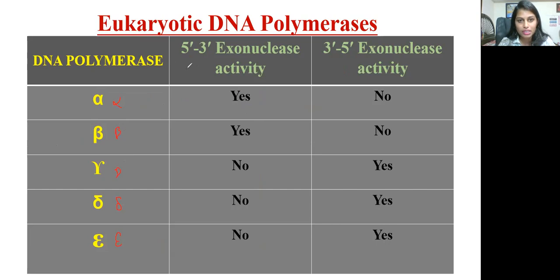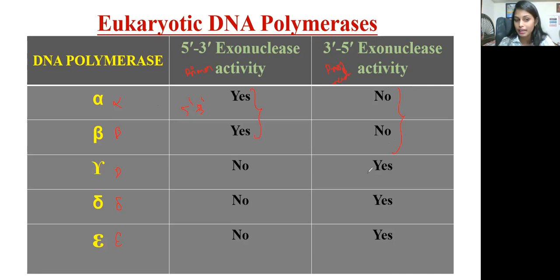Five prime to three prime exonuclease activity is for primer removal and three prime to five prime is for proofreading activity. DNA polymerase alpha and beta are involved in primer removal — both have five prime to three prime exonuclease activity. However, alpha and beta do not have three prime to five prime proofreading activity, but gamma, delta, and epsilon do have proofreading activity. Polymerase alpha is first involved in primer removal.